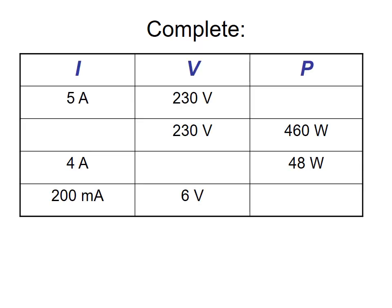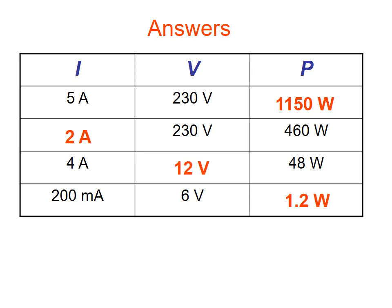Now complete the following table using P equals IV. The answers are: 1150 watts; 2 amps; 12 volts; and 1.2 watts — being careful to convert milliamps into amps.